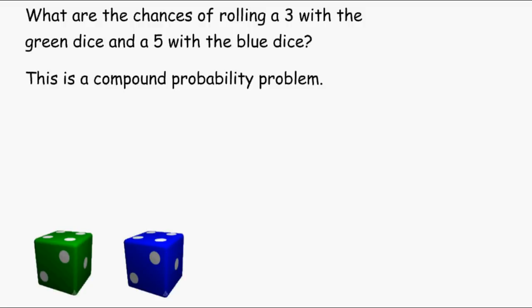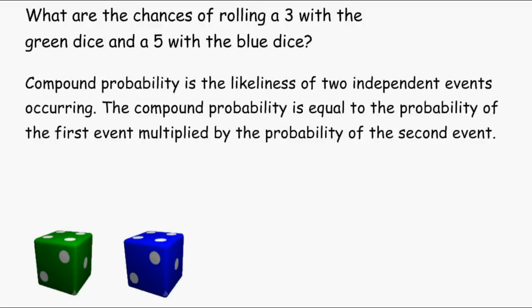This is a compound probability problem. Compound probability is the likeliness of two independent events occurring. The compound probability is equal to the probability of the first event multiplied by the probability of the second event.